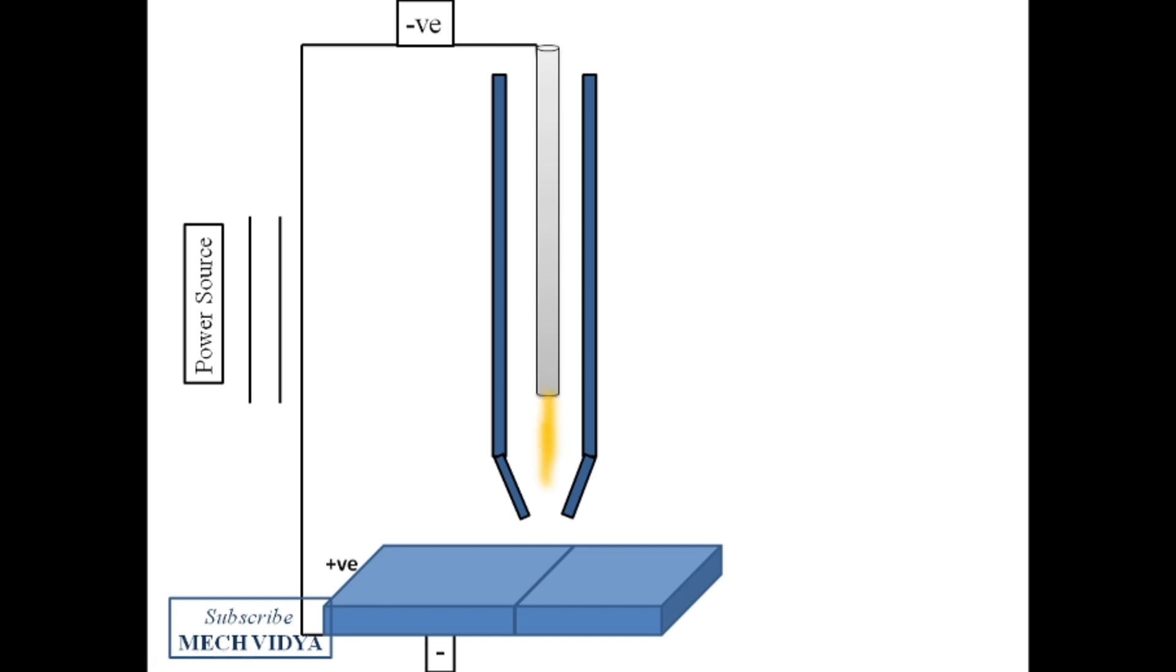So first, an arc is set up in between the electrode and the nozzle. As a result, when the argon or helium will pass through the spark, this gas will be converted to plasma.